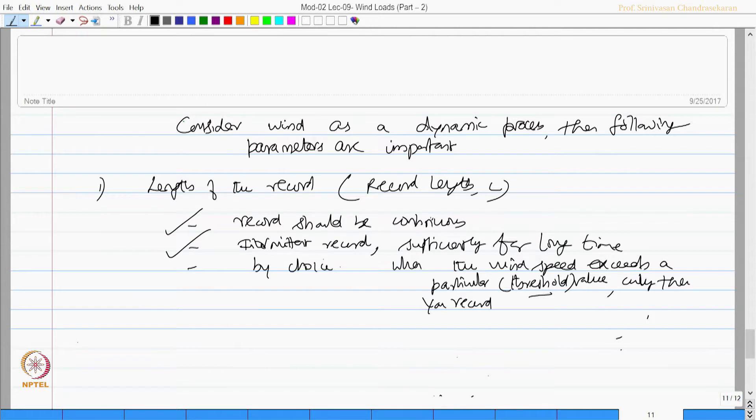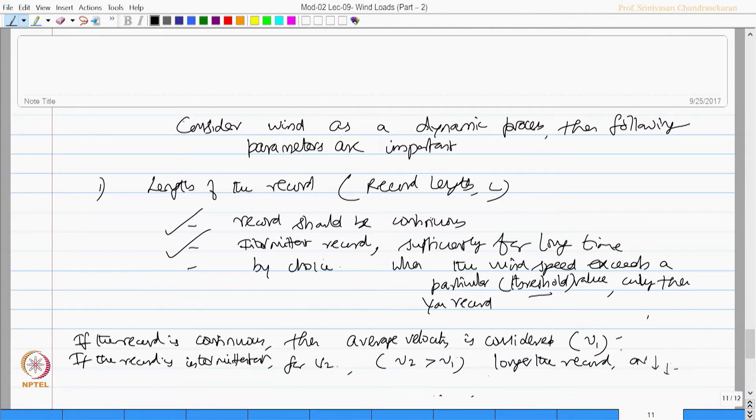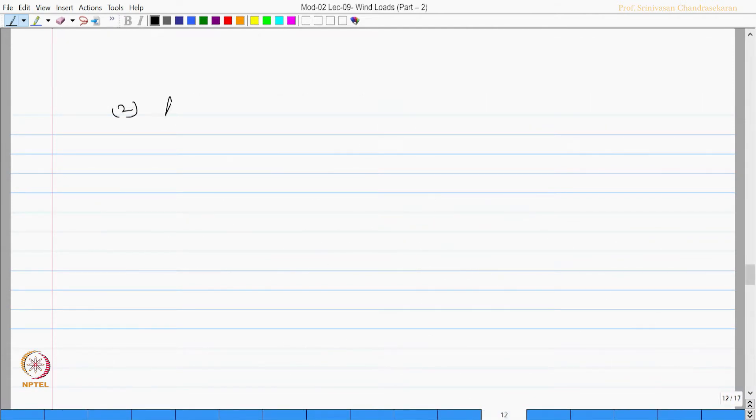If you have a record continuous, if the record is continuous then you take an average is considered for the design. Let's say that average is V1. If the record is intermittent and let's say the velocity is V2, it is seen that V2 is generally greater than V1 because longer the record, average will be lower.